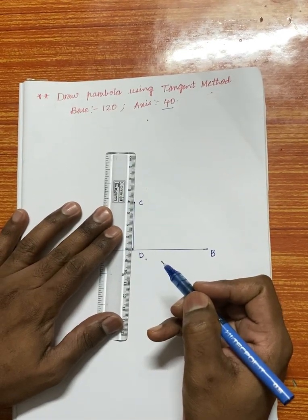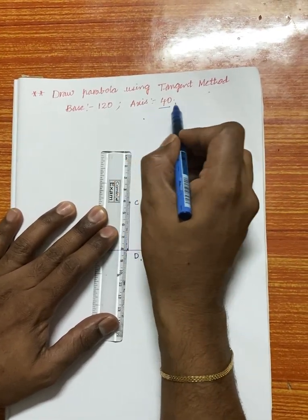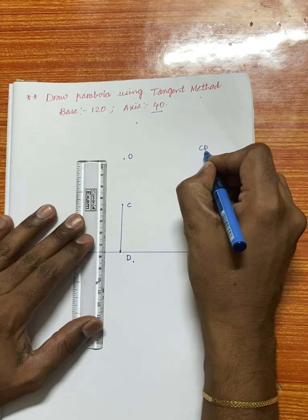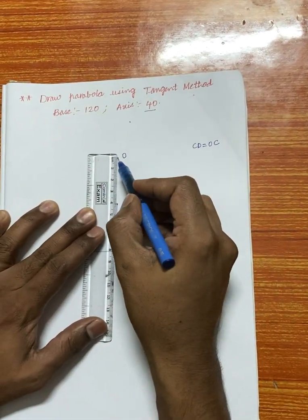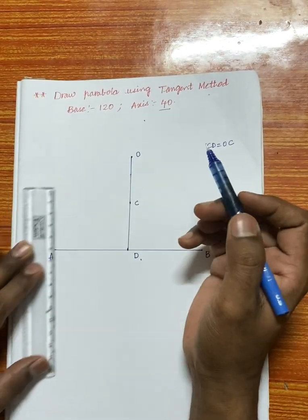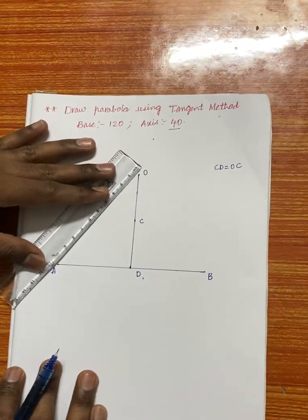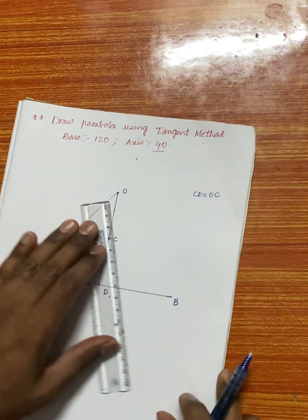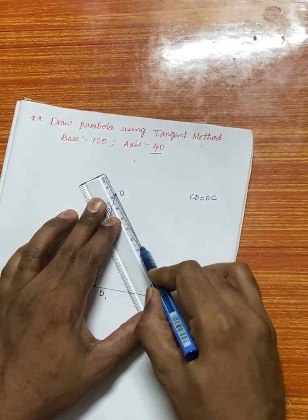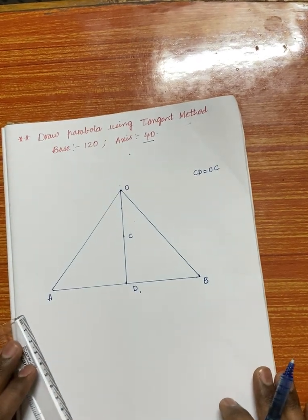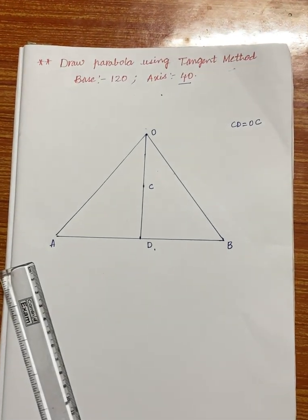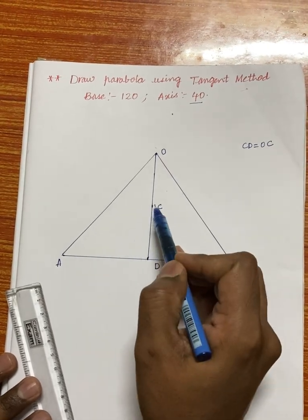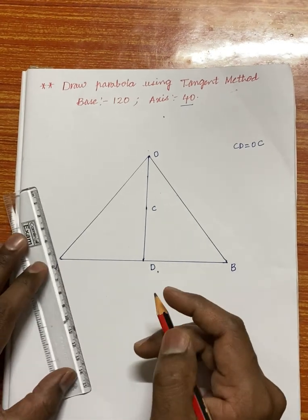Extend CD further so that CD equals OC — meaning the extended portion equals the original axis length of 40mm. Draw this extension using only the drafter. After that, join A to O and O to B, so that you have the base of 120mm and the axis CD of 40mm, with the extension CO also equal to 40mm.